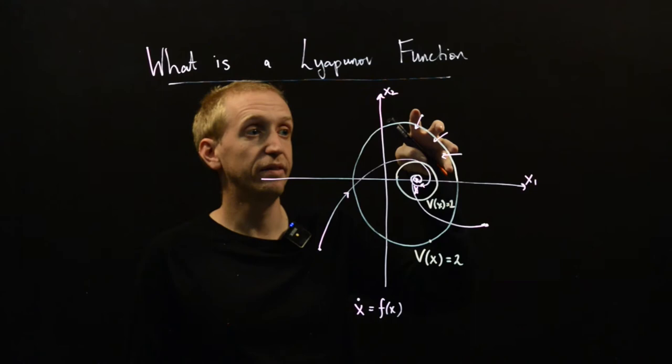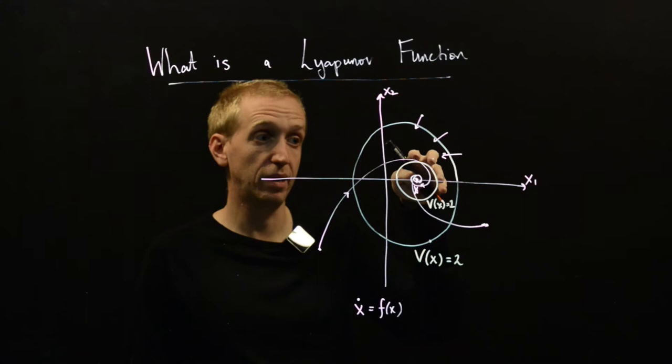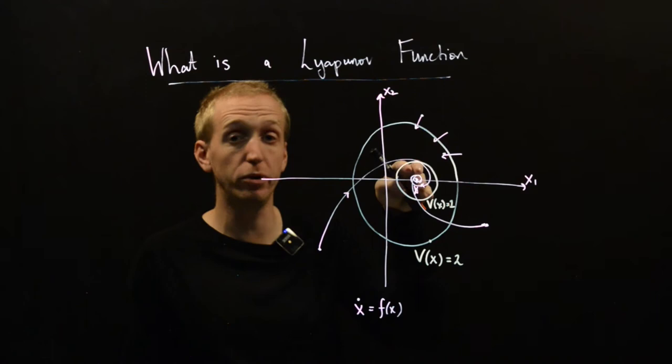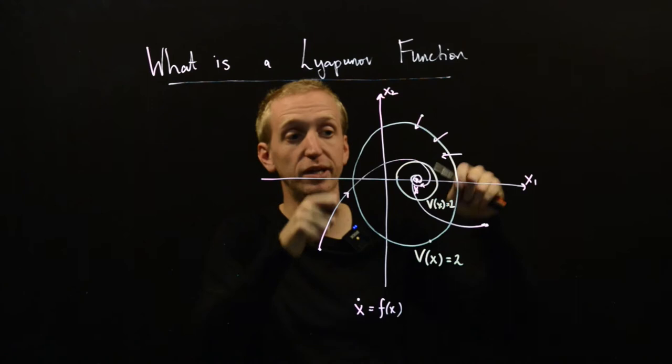And so what we can intuitively start to understand is that these arrows happen to be pointing to a direction of lower energy. And then we could imagine doing the same thing here and checking whether x dot or our little arrows in our phase portrait, were they pointing to a direction of lower energy again. And then what you can start to imagine is if at every point x dot is pointing to a direction of lower energy,